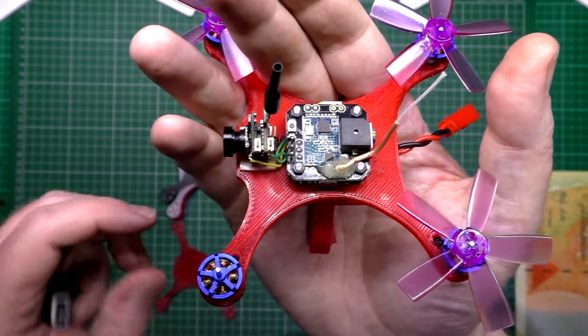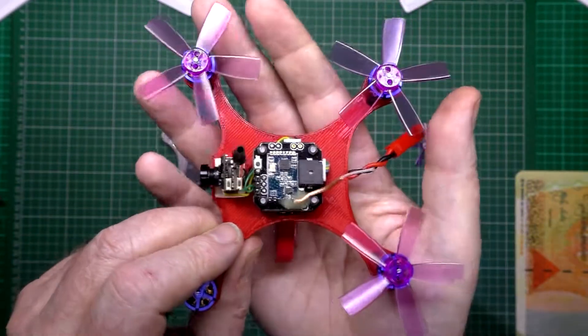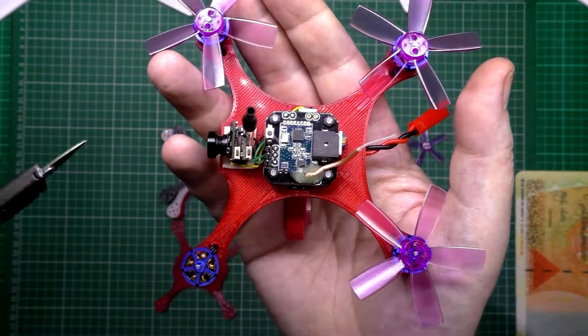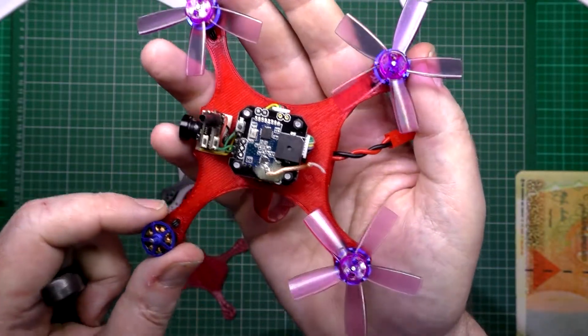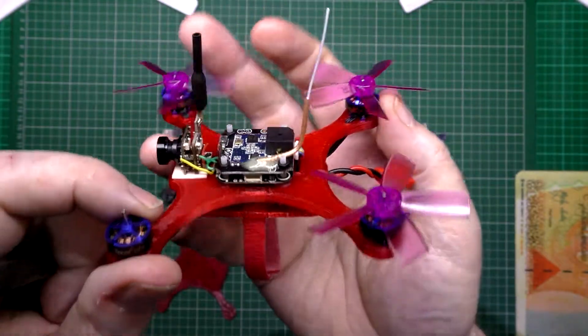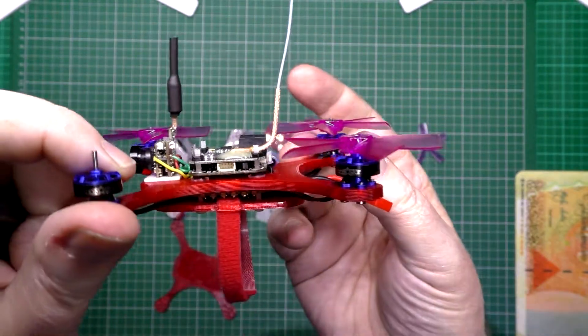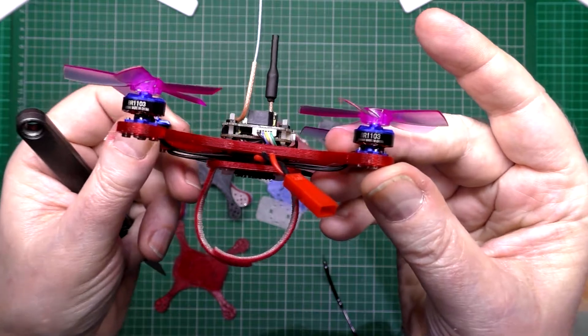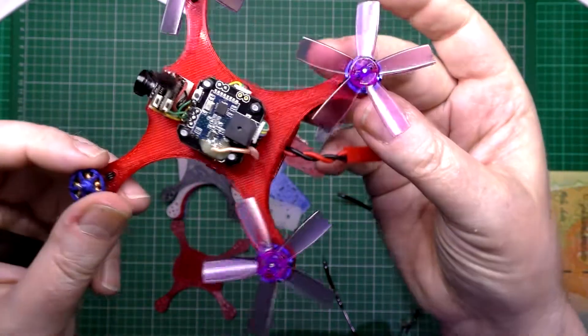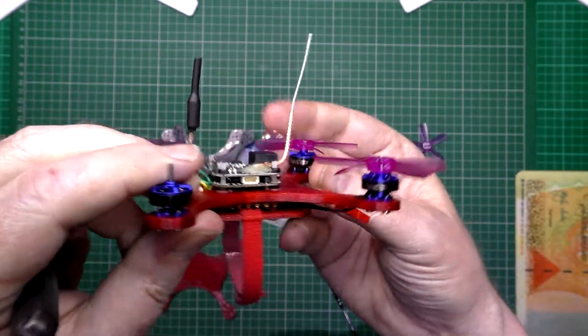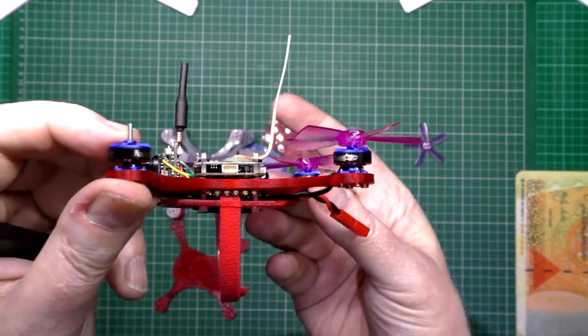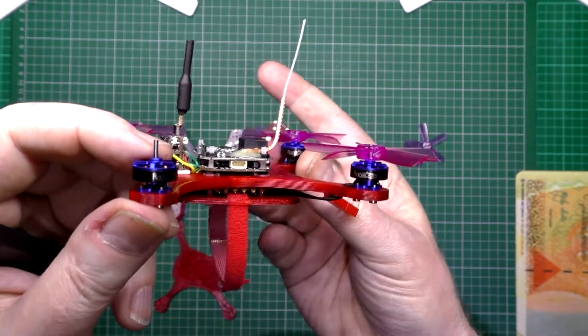And I've been trialling some Turnigy Bolt I think they are, 500mAh batteries and it flies like a rocket, it really does. And it's quite stable actually. It's not really an indoor sort of flyer because of the amount of power it's got.